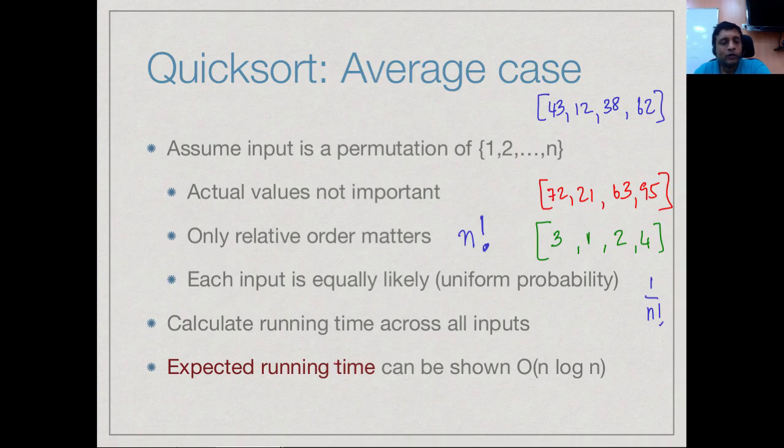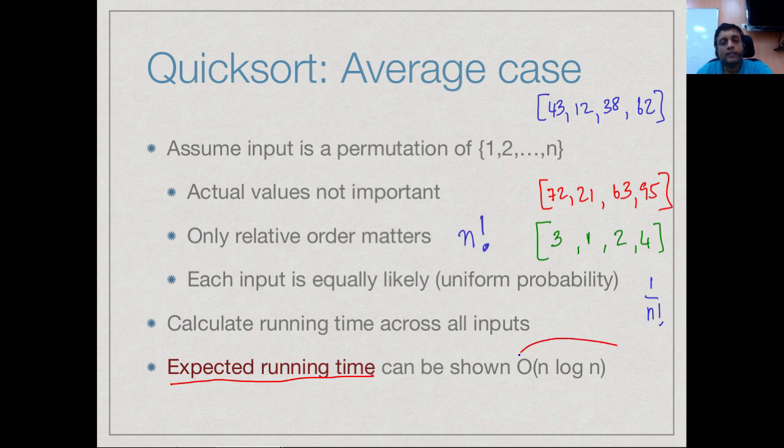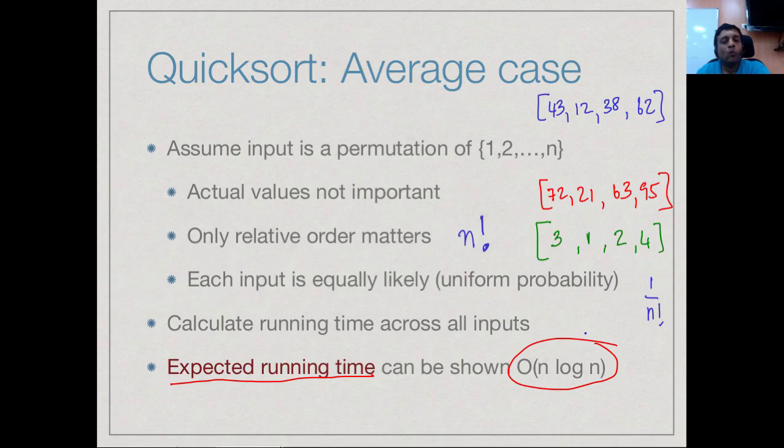This is what is in probability known as calculating the expected running time. Then you can show that this is actually order n log n. We have not shown it, we have just explained what is the mathematics required in order to show this. But in quicksort you can prove that the expected running time across all possible random inputs, equally likely inputs, is actually order n log n.